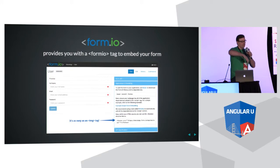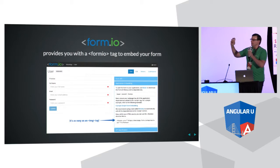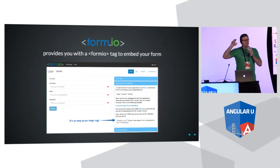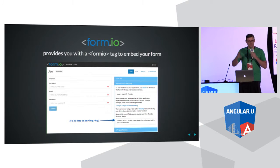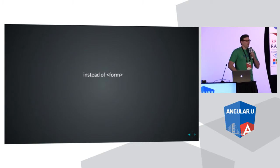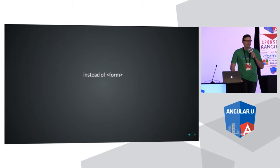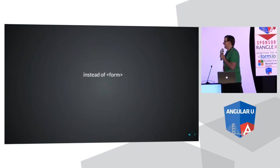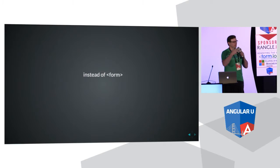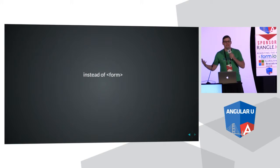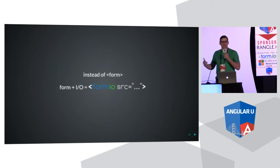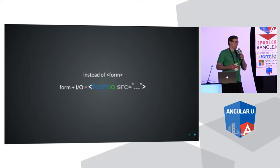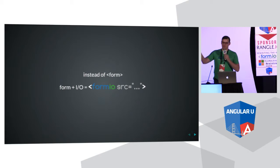Also keep this in mind: if you have millions of deployments of your mobile application, instead of having to redeploy your app through the app store, you can just change your forms in Form.io and automatically all those forms will update, because the forms dynamically render. This is essentially taking the HTML form tag that all of you have come to love and hate, adding IO — which is how we get our name, Form.io — and giving you this Form.io tag where you can provide the source to dynamically render the form and build the API at the same time.